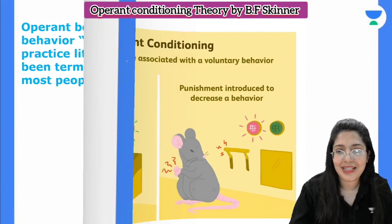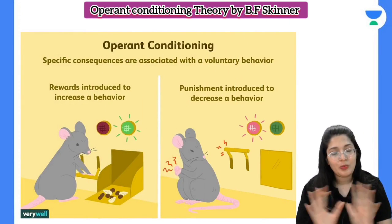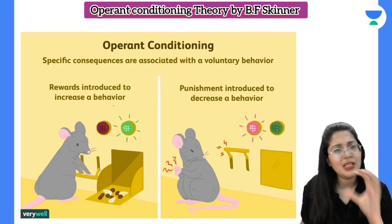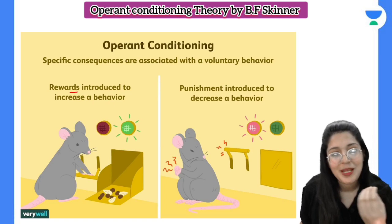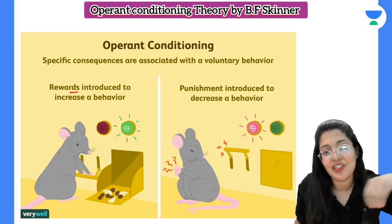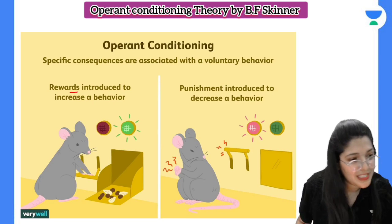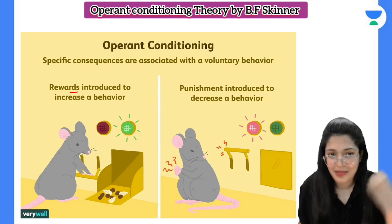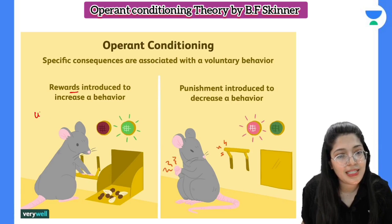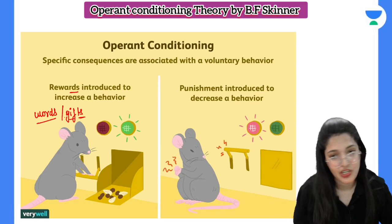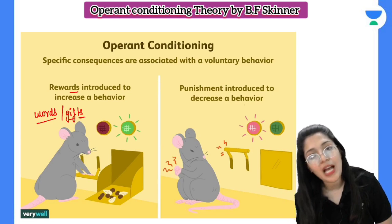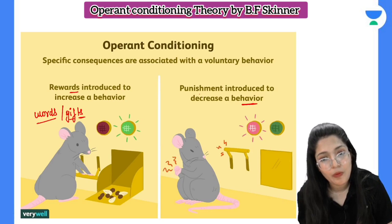Let us take a small example. What happened in childhood? When we were doing a good job, we would get a reward — appreciation, by words or a gift, maybe two rupees or more. If you were doing a wrong behavior, you would get a punishment.